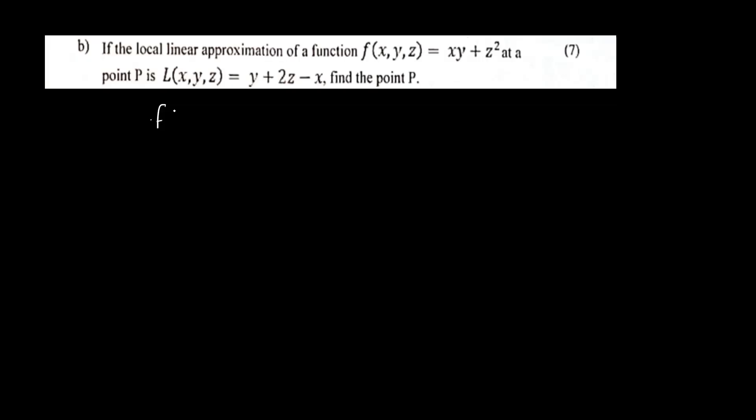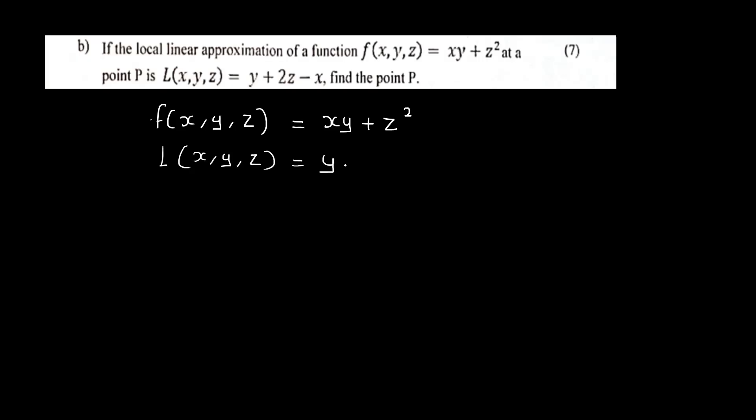If the local linear approximation of a function f(x,y,z) = xy + z² at a point P is L(x,y,z) = y + 2z - x, find the point P. The function f(x,y,z) = xy + z² at point P has local linear approximation L(x,y,z) = y + 2z - x.